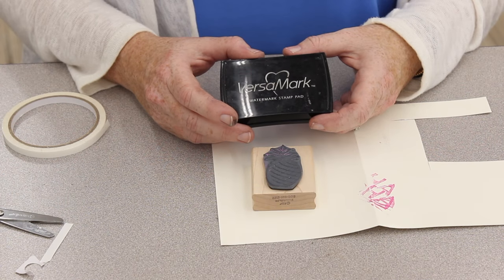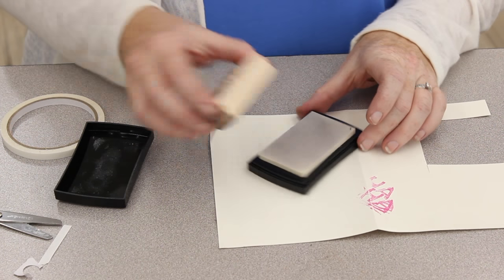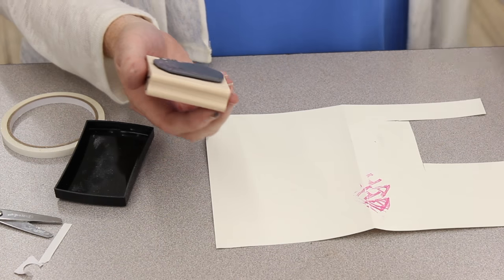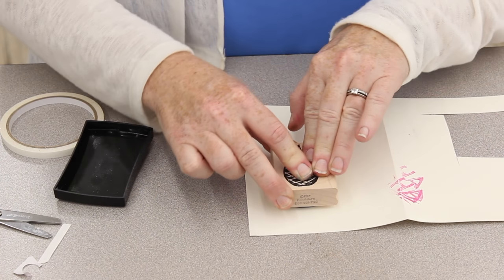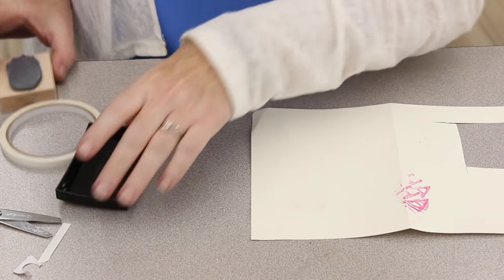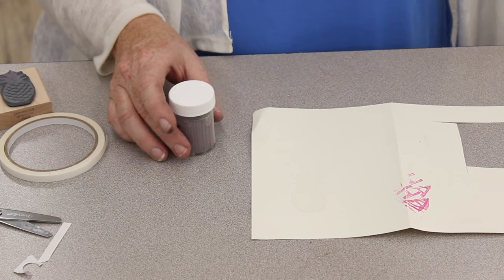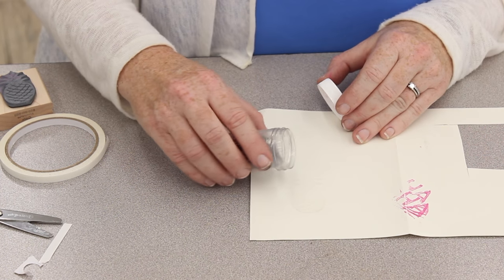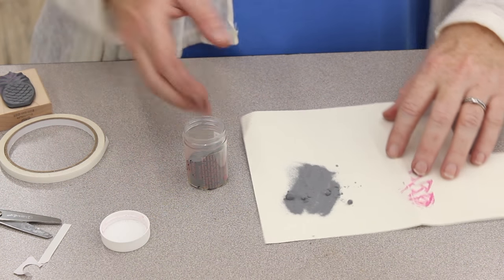We're going to use Versamark watermark stamp pad and it's a clear stamp but it's sticky so the powder will stick to it. I'm going to push it down and while it's still wet, and it stays tacky for a little bit, we're going to put our embossing powder right over there.